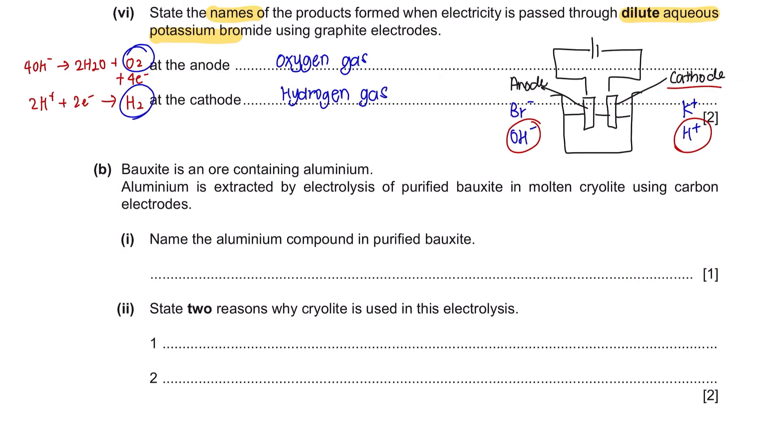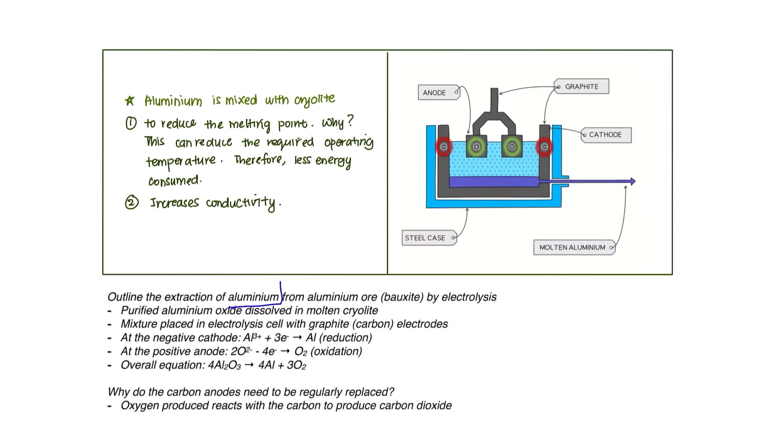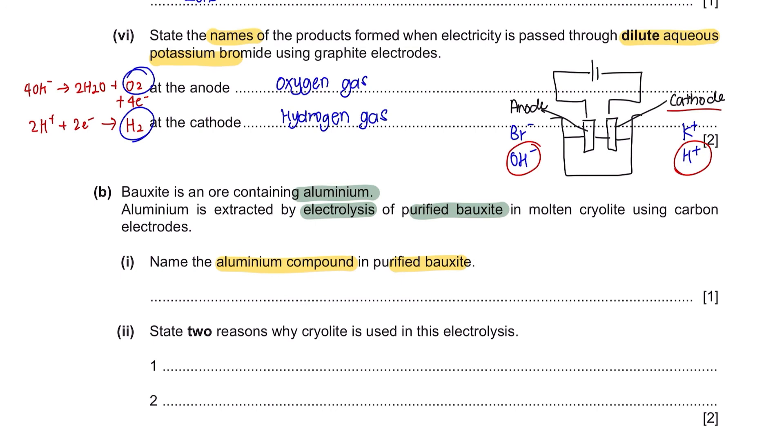Question B. Bauxite is an ore containing aluminium. Aluminium is extracted by electrolysis of purified bauxite in molten cryolite using carbon electrodes. Part 1. Name the aluminium compound in purified bauxite. Aluminium is extracted from its ore using electrolysis. Its main ore is bauxite which contains aluminium oxide. So the name of the aluminium compound in purified bauxite is aluminium oxide.